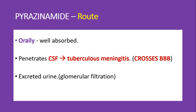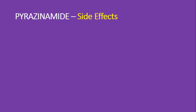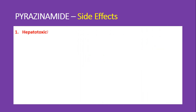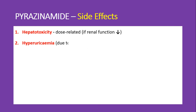Pyrazinamide is excreted through the urine via glomerular filtration. Regarding side effects, pyrazinamide can cause dose-related hepatotoxicity. You should be very careful in patients with impaired renal function, as this can lead to accumulation of pyrazinamide and increased hepatotoxicity risk.